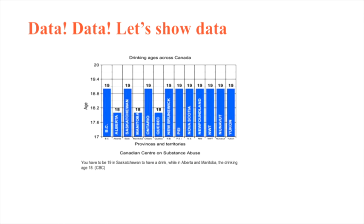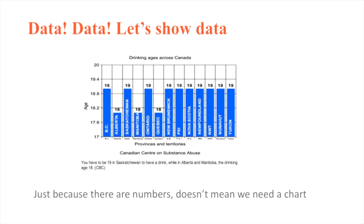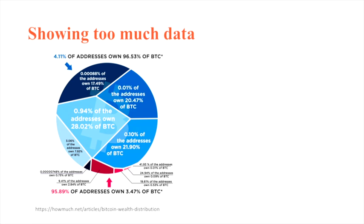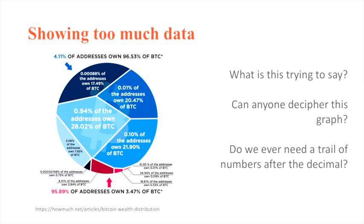The second common approach is showing too much data. It's like, 'oh my gosh, we just did a study, we have so much data, everything down to ten numbers after the decimal.' And then you get this — what does this even say? After spending five minutes looking at this chart, what they're trying to say is that 96% of the people who own Bitcoin own only less than 4%, whereas 4% own 96% of it. That's it — two numbers. Do you need 95.89% versus 3.47%? Is that more effective than saying 96 versus 4?